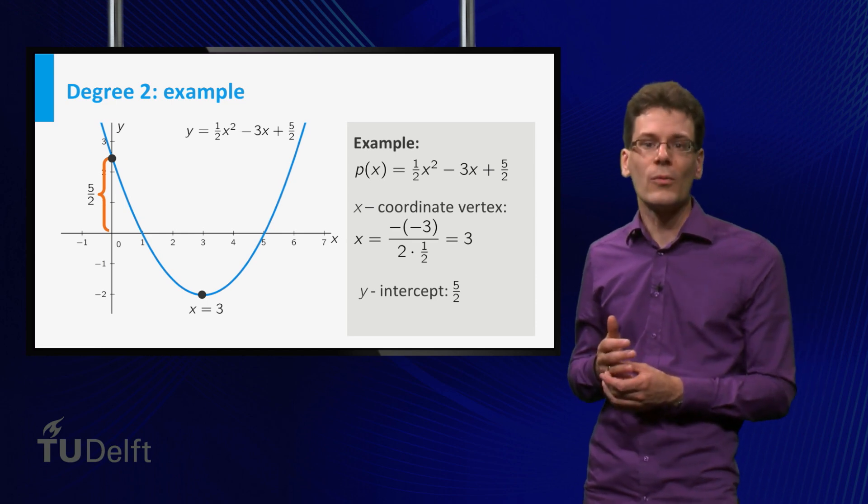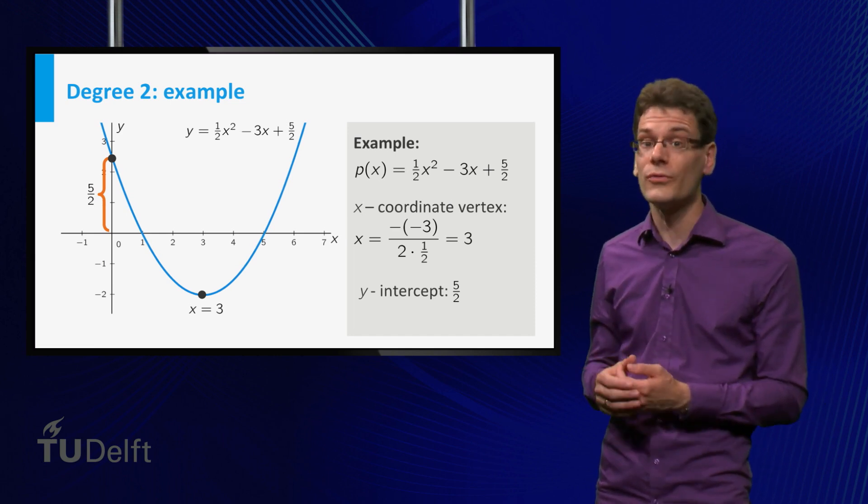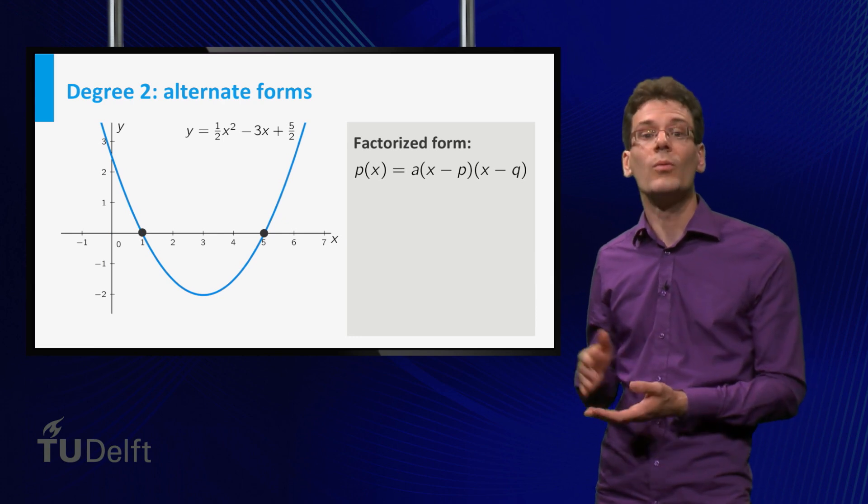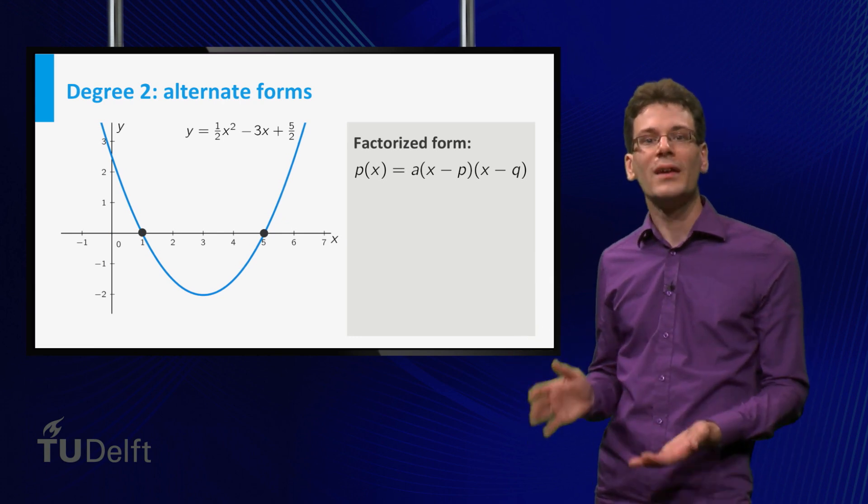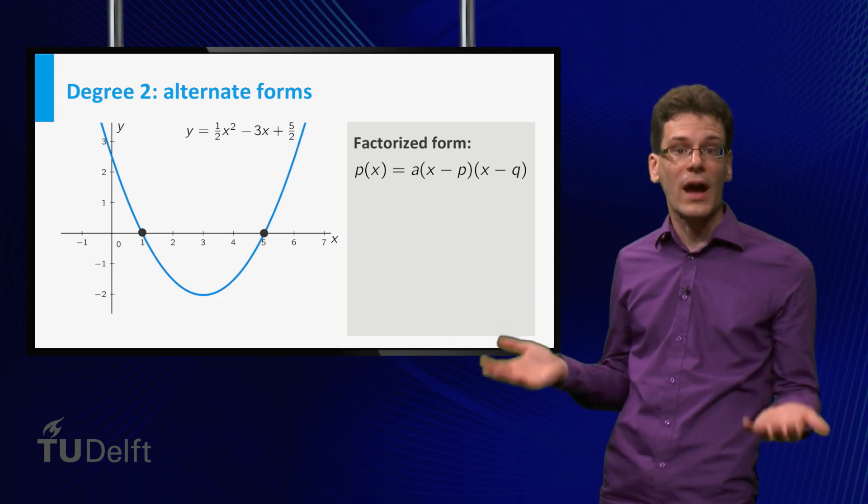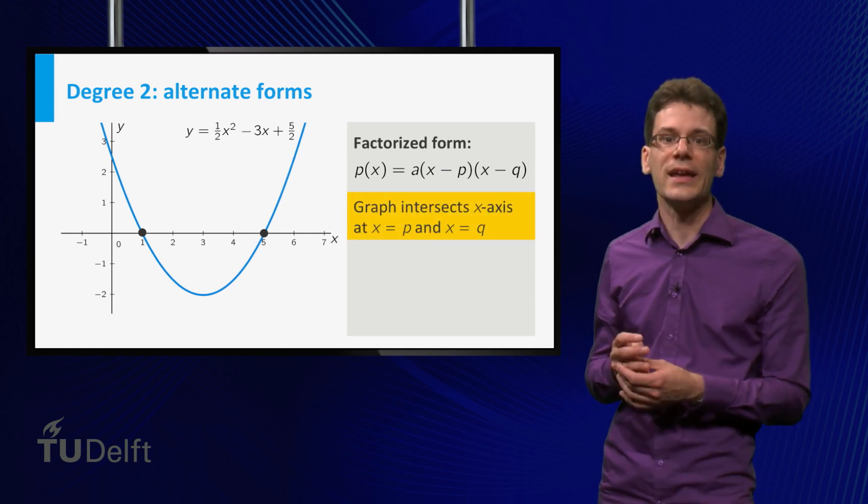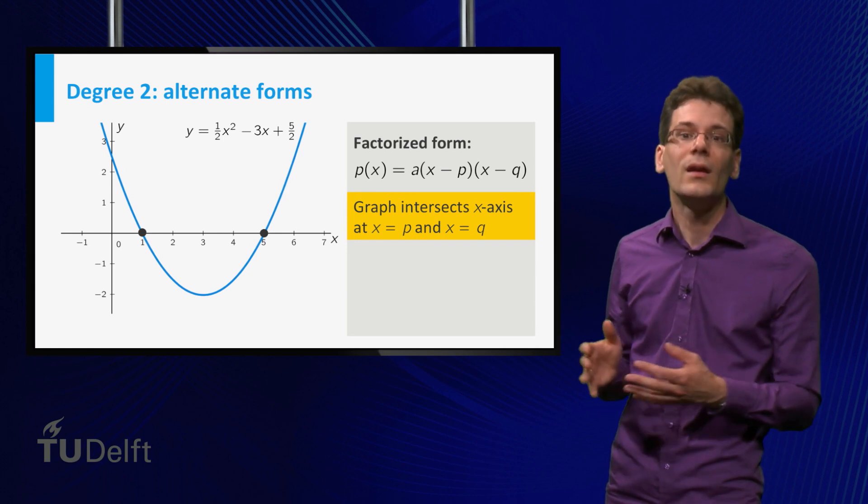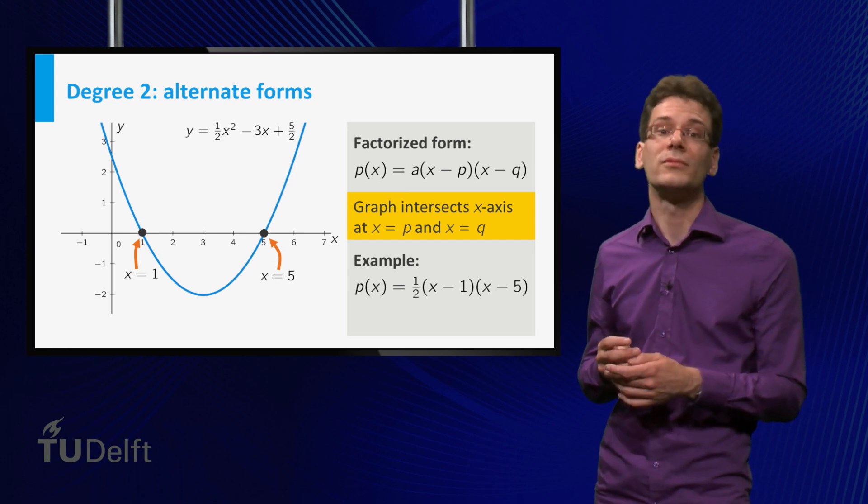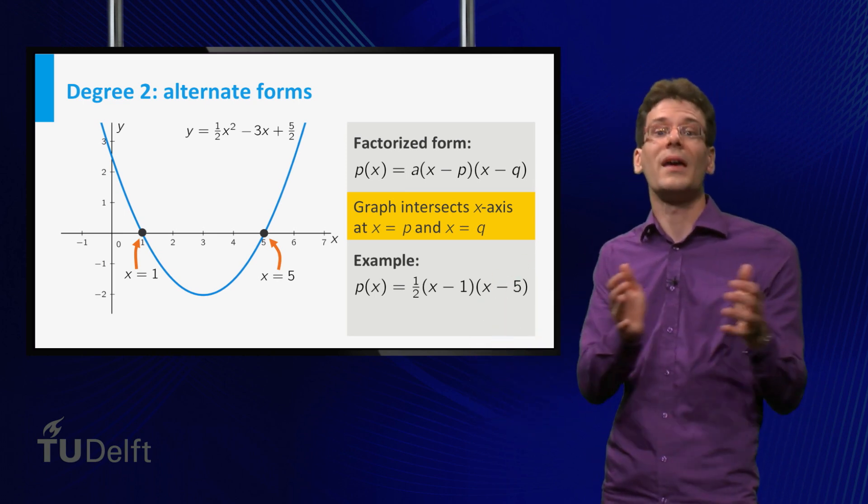As we mentioned, you can write any polynomial in standard form. But when it comes to quadratic polynomials, there are at least two other forms that are also very useful. The first is the factorized form, a times (x minus p) times (x minus q), where a, p and q are constants. The advantage of this form is that it tells you a lot about the shape of the graph. a again gives information about the wideness of the parabola and whether it opens upward or downward. p and q are precisely the x-coordinates of intersection points with the horizontal axis. The polynomial function in our example can be written as 1 half times (x minus 1) times (x minus 5). Indeed, you see that the graph intersects the horizontal axis in x equal to 1 and x equal to 5.